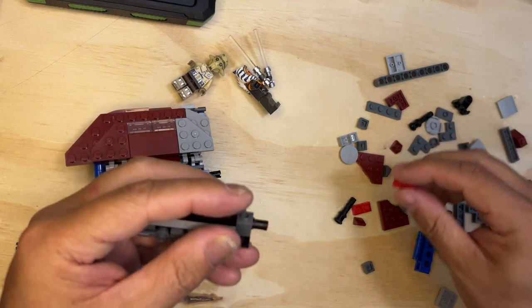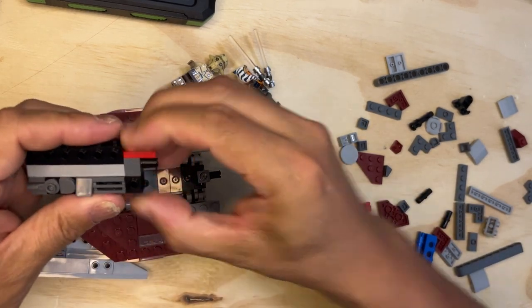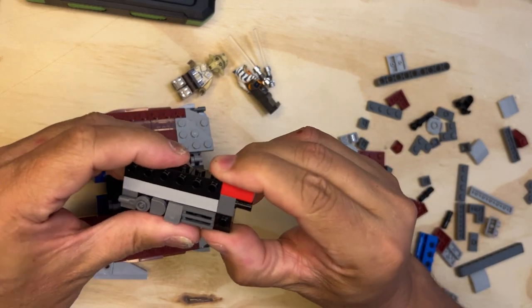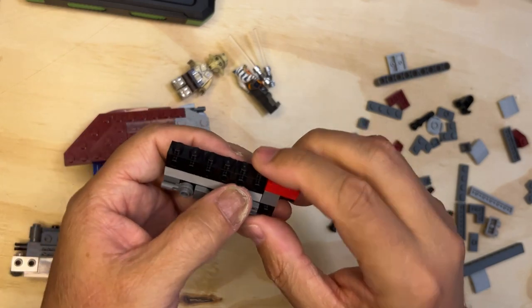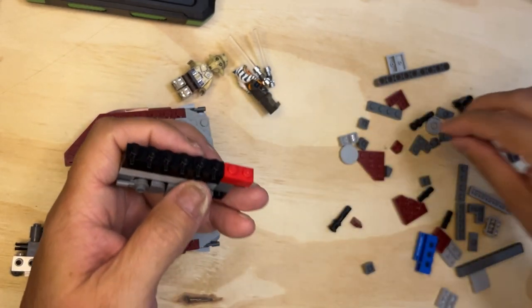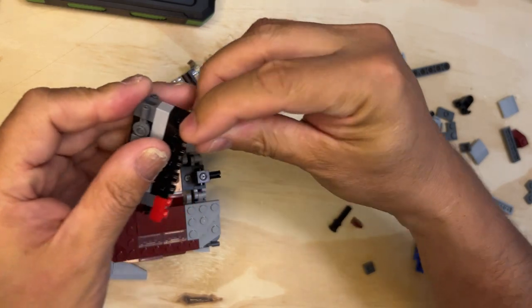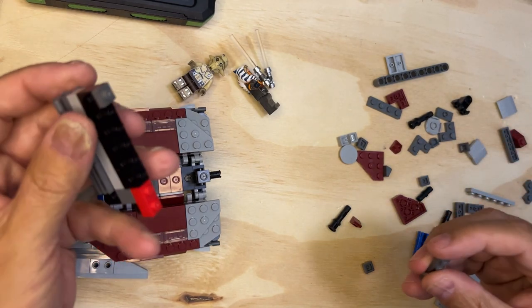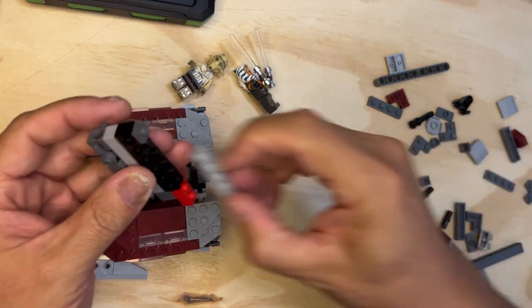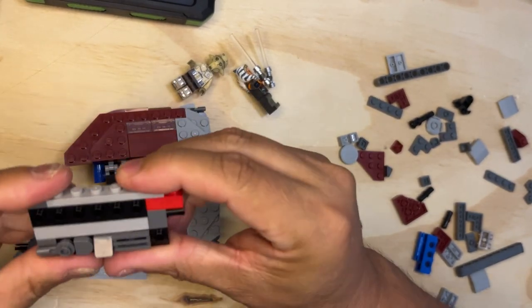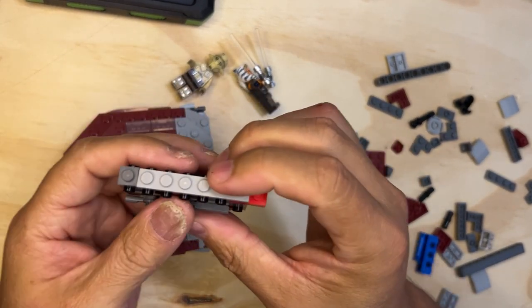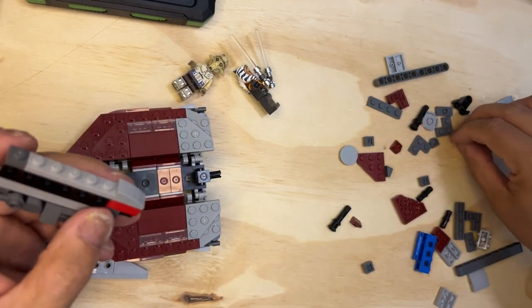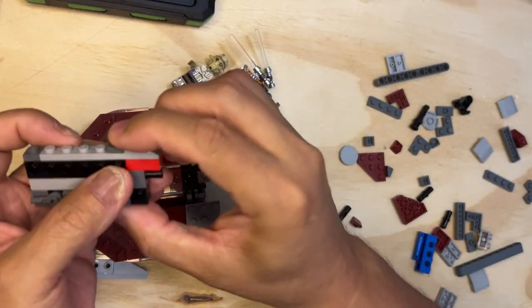And I need two of these red one-by-twos right here like this. Okay, okay. And then I need one of these one-by-one studs. Okay, okay. I'm gonna need a step down. I call them bumpers, people call them different things, but there you go.